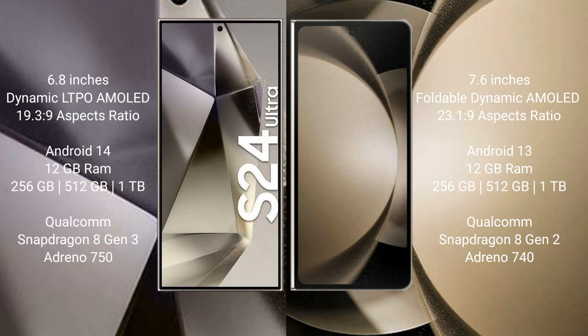The Samsung Galaxy S24 Ultra comes with 12GB RAM and storage options of 256GB, 512GB, and 1TB internal storage, powered by a Qualcomm Snapdragon 8 Gen 3 processor with Adreno 750 GPU.